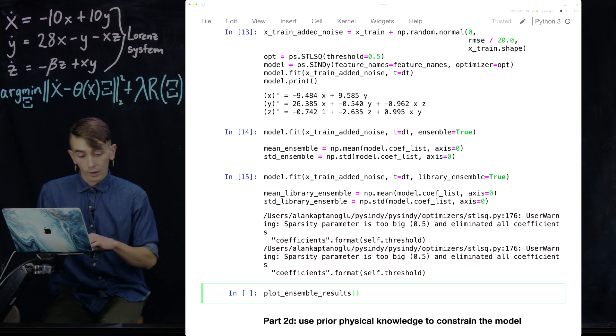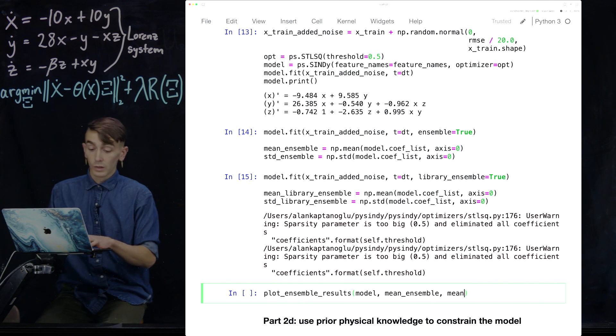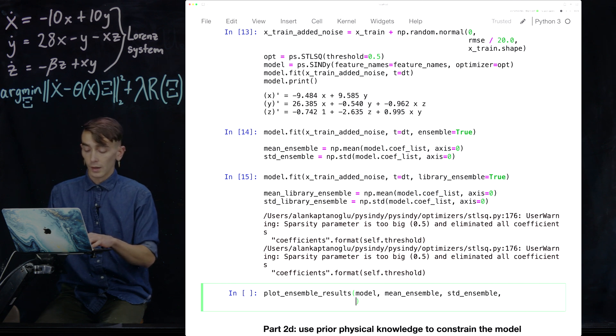So this is just called plot ensemble results, passing the model, the mean with the ensembling and the standard deviation with the ensembling. And then same thing for the library ensembling.